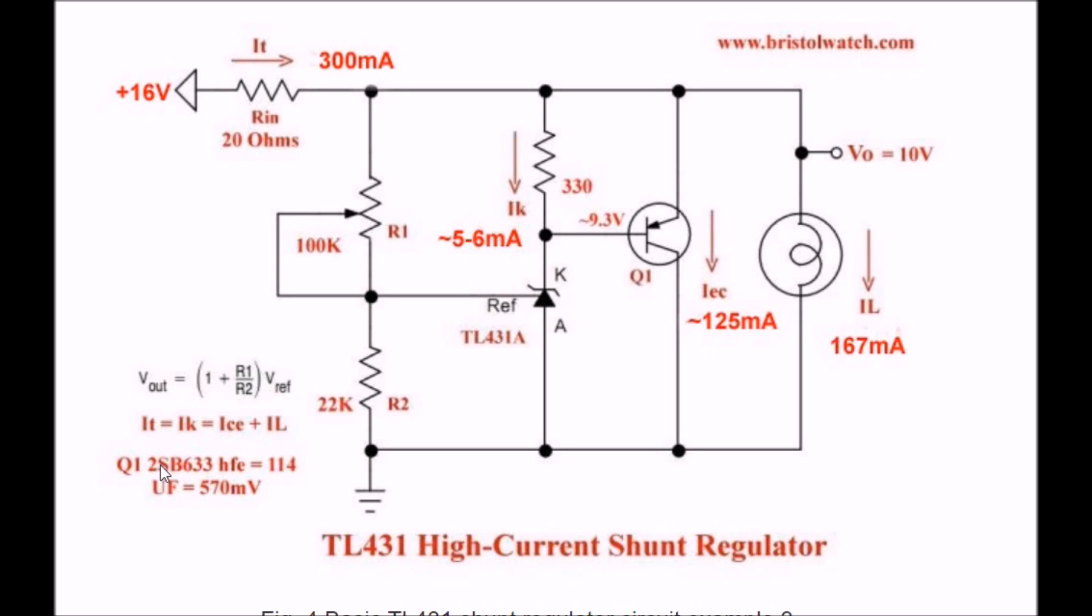Q1 in my test circuit was a 2SB633 with an HFE of 114. I have a transistor checker. I know what the gain is, actually. But you don't have to worry about that level of it, because you can adjust it for the appropriate voltage output.